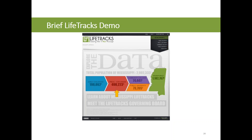Here you see the home page for Lifetracks — this is publicly available. You can see images in the center representing the different sections of SLDS data: PK-12, Community College, and Public University. Clicking on one of these images, such as the PK-12 image that's highlighted, will take you to a report list for that section.